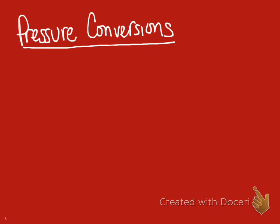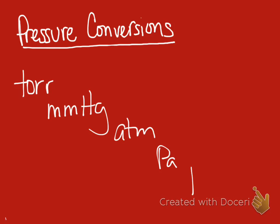Welcome to a brief tutorial on doing pressure conversions. When we're dealing with gases, we always have to think about pressure. And when we think about pressure, we have to think about units. Some of the common units for pressure are torrs, millimeters of mercury, atms or atmospheres, pascals, and kilopascals.